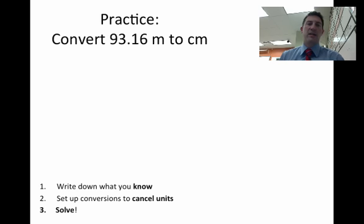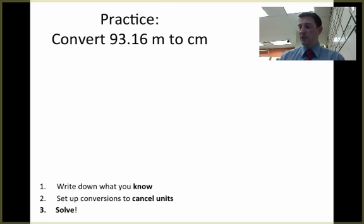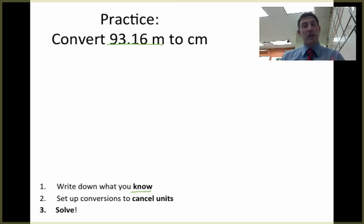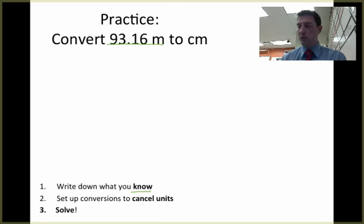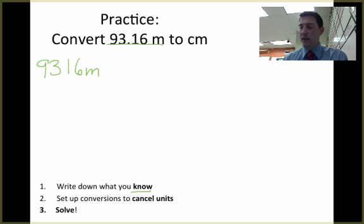Let's look at a practice problem: convert 93.16 meters to centimeters. I've got the three simple rules at the bottom, and I'm going to start. I'll use green to write down what I know. The only thing I'm given is 93.16 meters, so that is what I know. If this was a long word problem, I might have to figure out what's given to me, but it's pretty straightforward here. So I write down 93.16 meters.